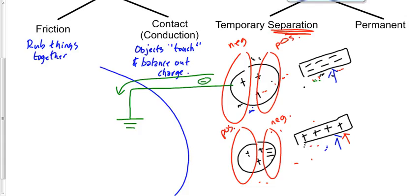The final step to make it permanent: cut the ground wire — disconnect it. Then you can take the charging object away, and the object stays positive. The electrons want to come back up into the object from the ground, but they can't because there's no longer a path from the ground up.